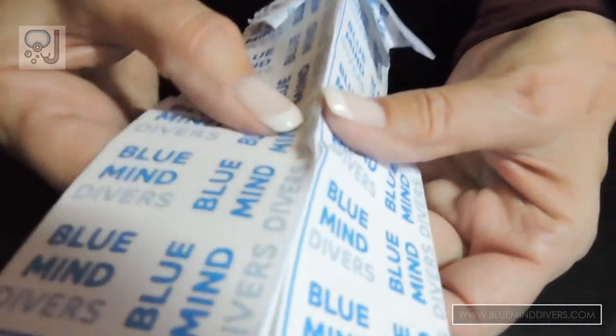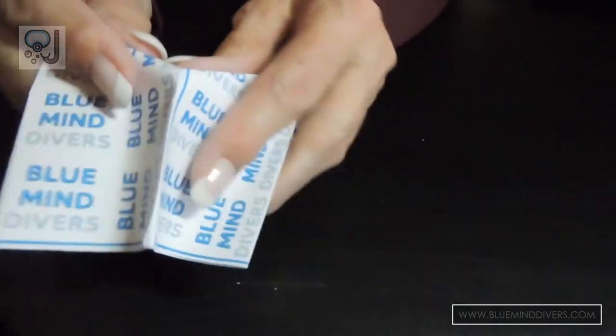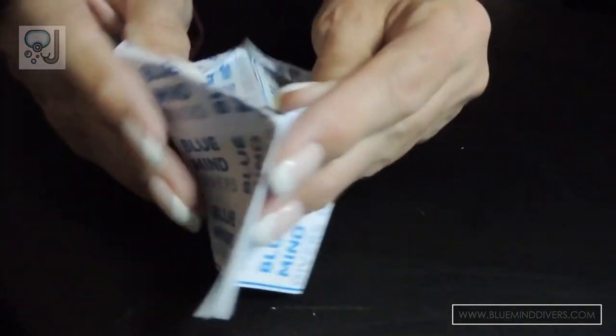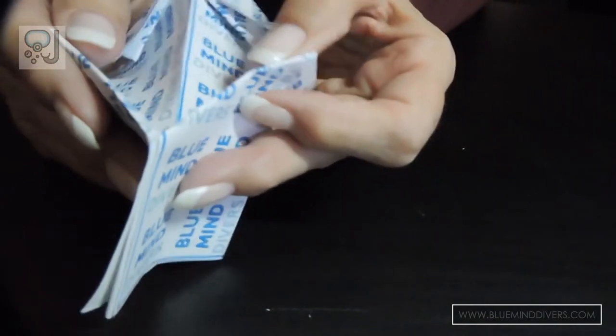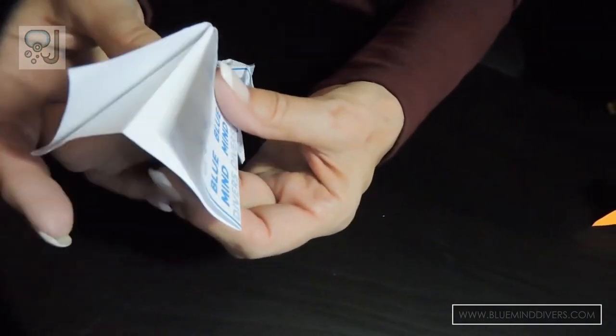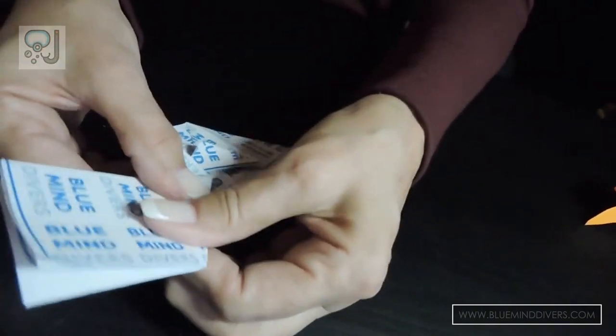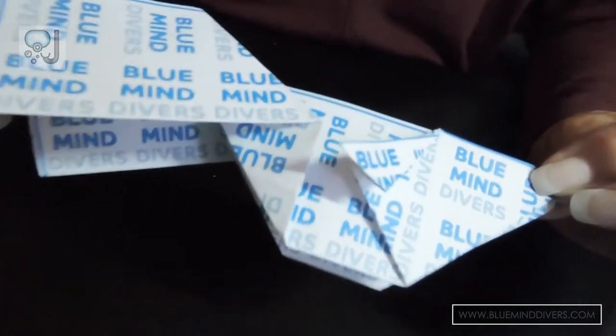So holding your fish, take the tail and turn it like that, and then push the sides together. And there is your goldfish.